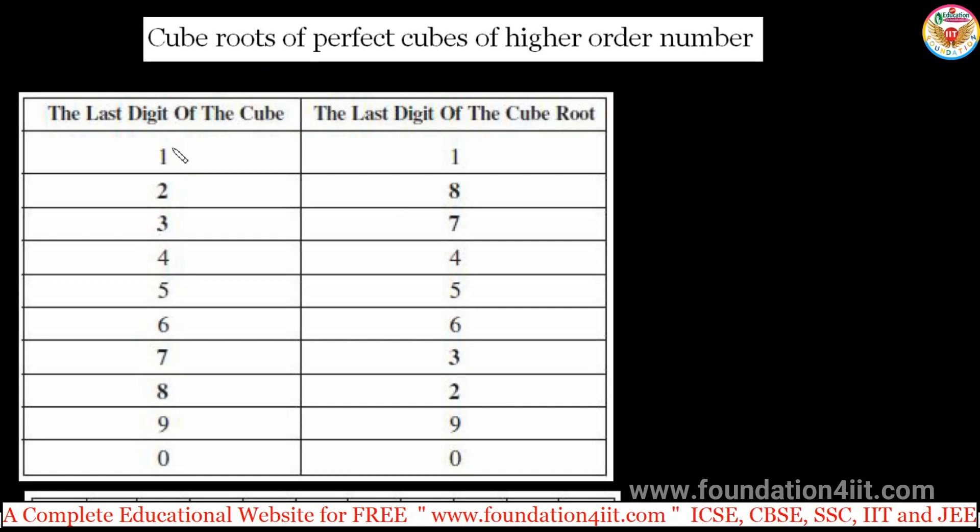According to the previous video, we need to remember these digits. If any number's last digit of the cube is 1, then last digit of the cube root is 1. These are all the same: 1, 4, 5, 6, 9 and 0. These are the same, only for 2 and 8, 8 and 2, and 3, 7. For 2, it comes 8, and for 3, it will be 7. 3 to 7 and 7 to 3.